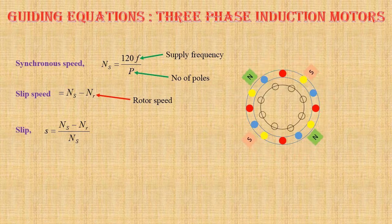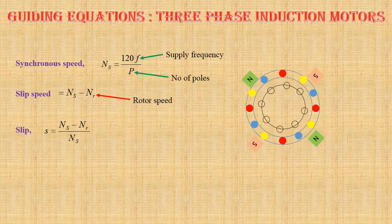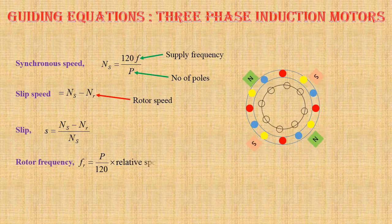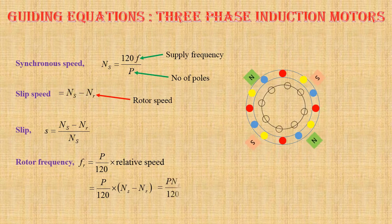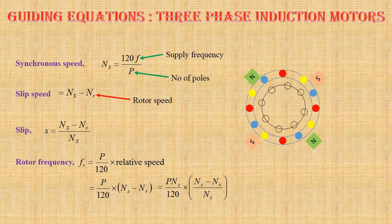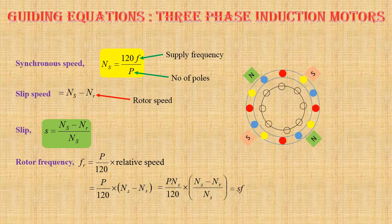When we multiply slip with 100, we get percentage slip. The frequency of rotor induced EMF, FR equals p by 120 into relative speed, that is equal to p by 120 into Ns minus Nr. This may be written as p·Ns by 120 into (Ns minus Nr) divided by Ns, which equals S times f. Therefore, rotor frequency has a very small value and we can neglect rotor iron loss.